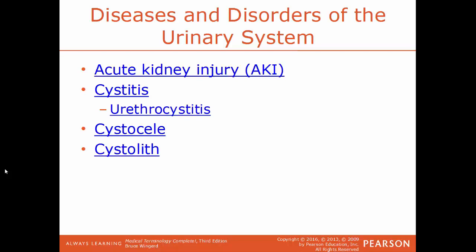Cystocele is a herniation of the urinary bladder into the vagina of a woman. What happens is the wall between a woman's vagina and the bladder becomes weakened, so the bladder actually droops down into the vagina. Cystolith is having a stone within the urinary bladder.